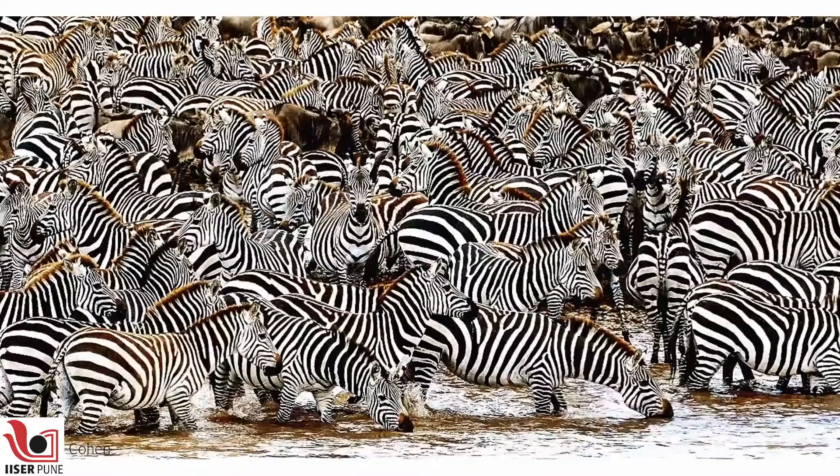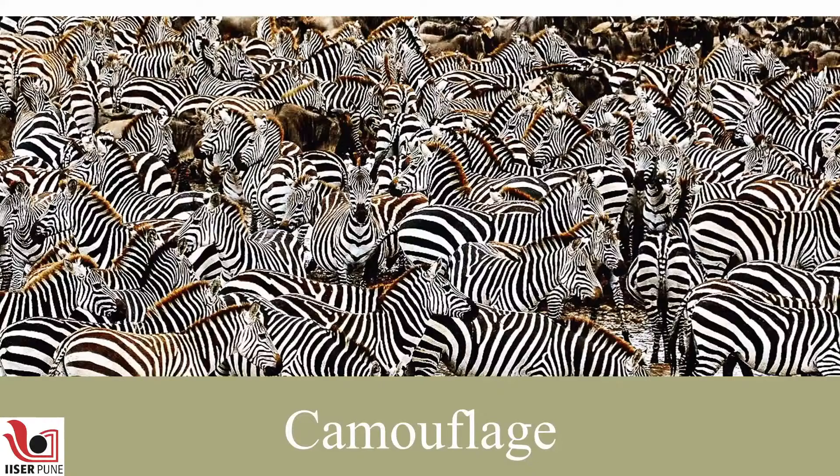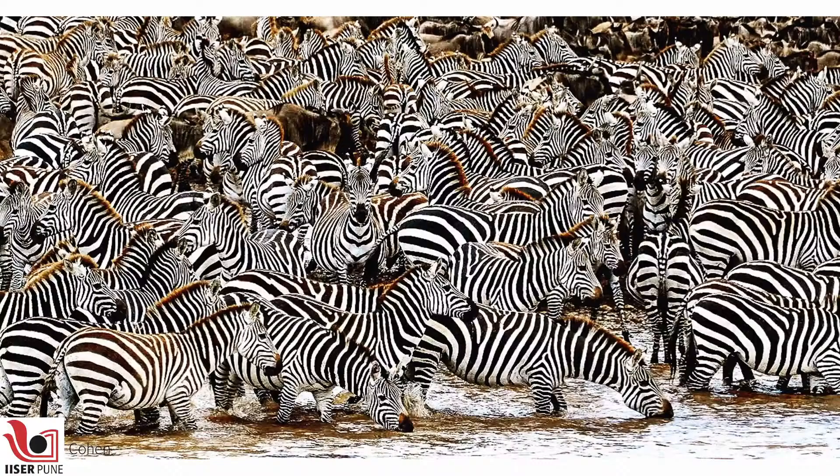This is a very interesting mechanism animals have developed: camouflage. They hide themselves in their surroundings to hide from predators or from their prey, and to ambush their prey. Now I'll call upon my friend Nina to continue this journey through the animal kingdom.